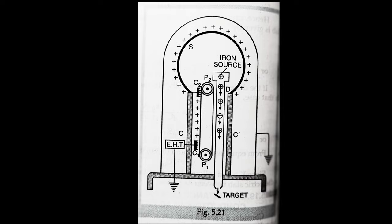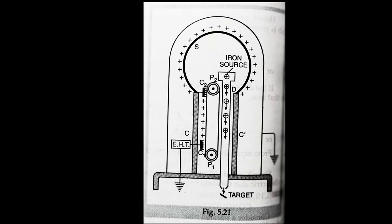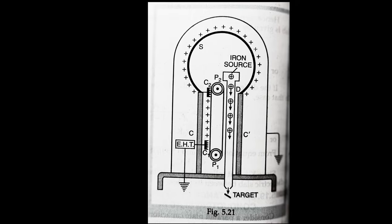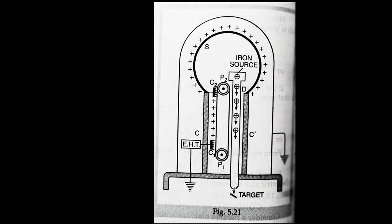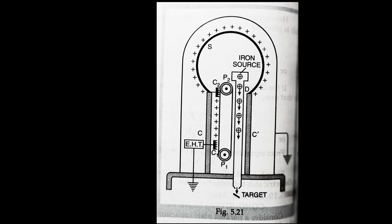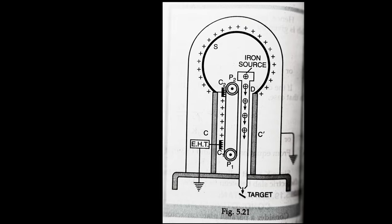With the increase of charge on the sphere, its leakage due to ionization of surrounding air also becomes faster. The maximum potential to which the sphere can be raised is reached when the rate of loss of charge due to leakage becomes equal to the rate at which charge is transferred to the sphere.